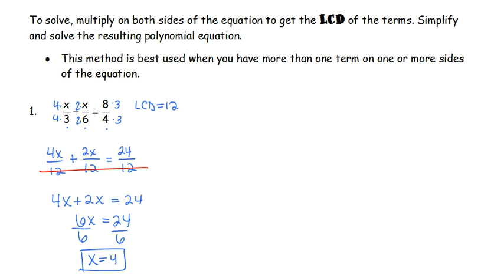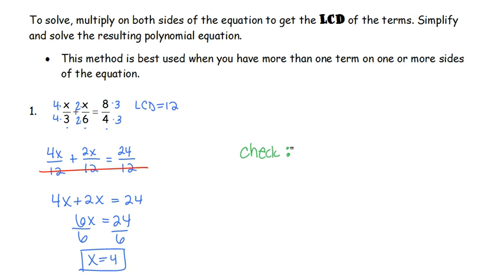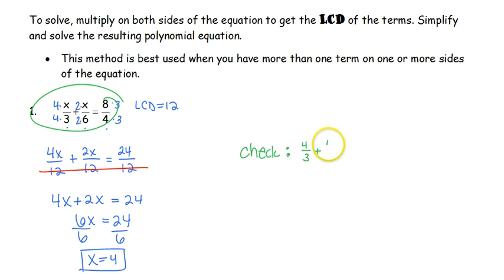You must check to see if your solution works. When solving rational equations, there are extraneous solutions — solutions that aren't necessarily going to work. If we get x equals 4, always go back to the very original equation to check, not to any of the altered equations. So we've got x over 3, that's 4 over 3, plus x over 6, 4 over 6, is equal to 8 over 4.